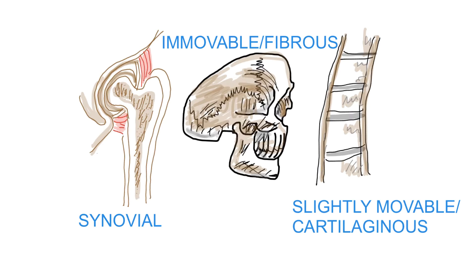There are three types of joints: immovable or fibrous, slightly movable or cartilaginous, and freely movable or synovial.